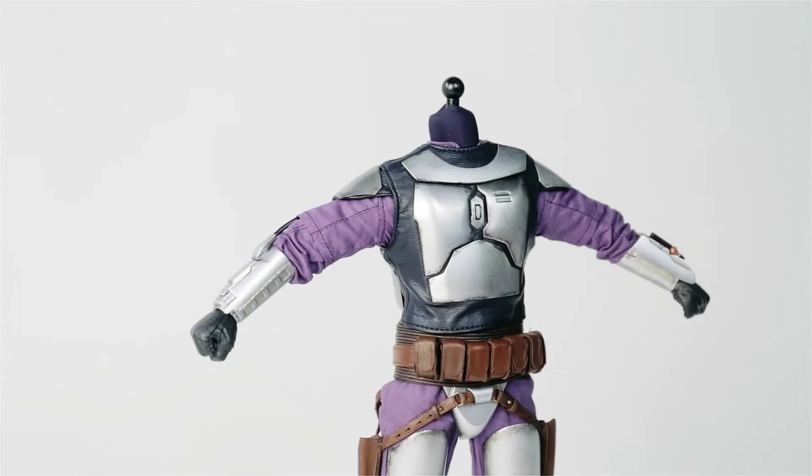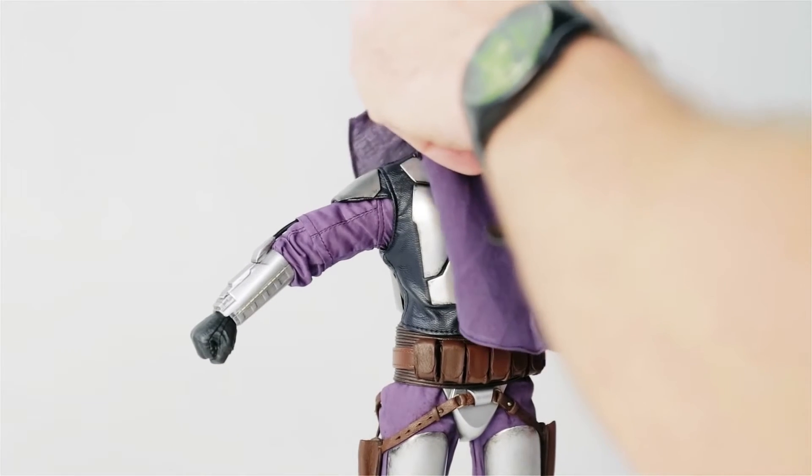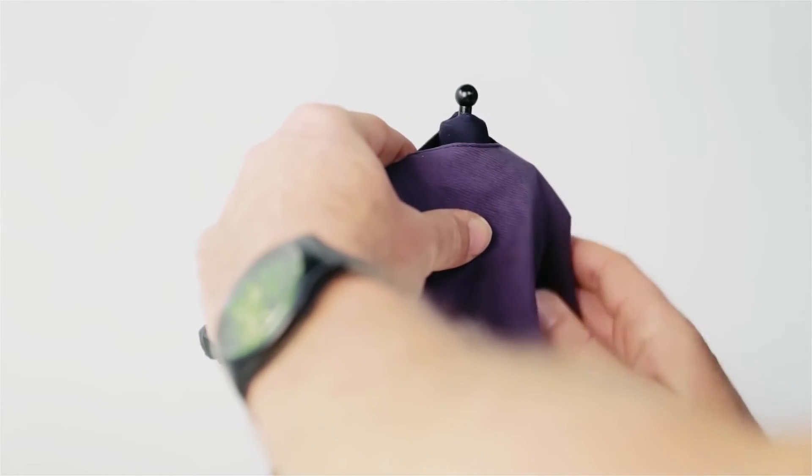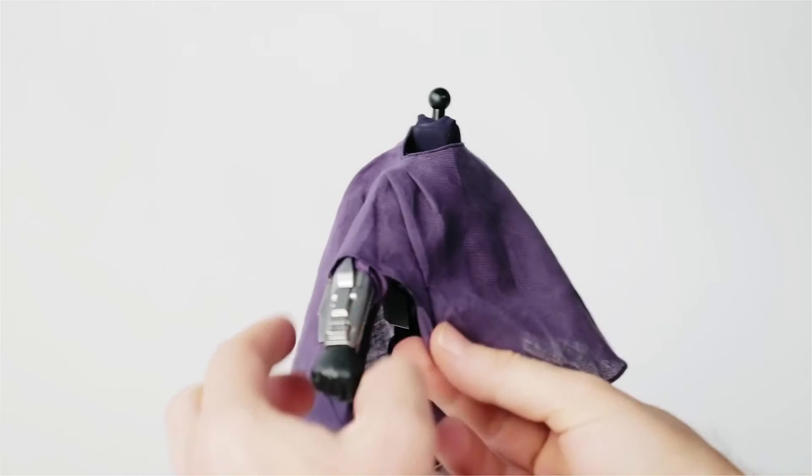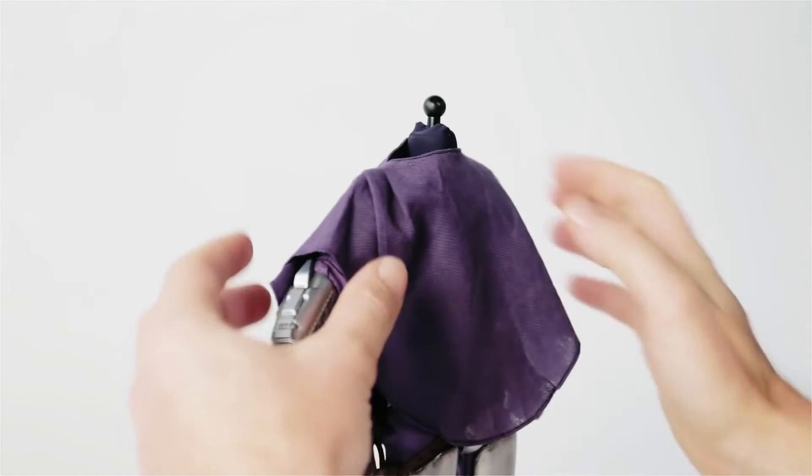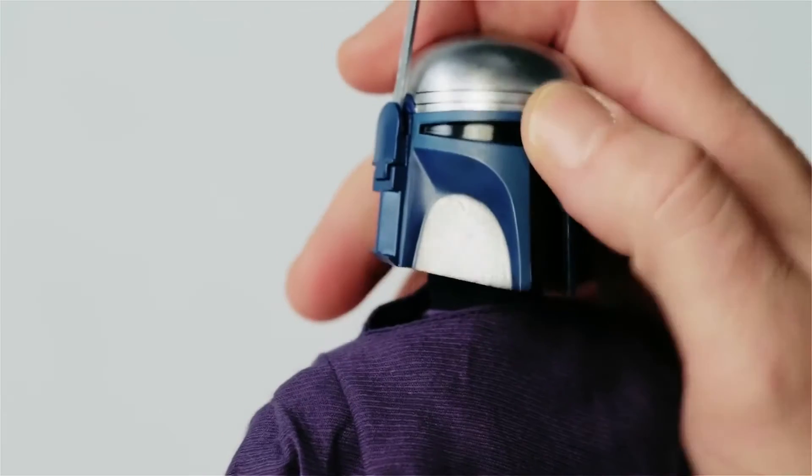Remove the helmet before placing the poncho on the figure. Feed the left arm through the hole in the poncho, ensuring that the pleated side is on Django's back and the smooth side is on his front. Once the poncho is draped on his body, secure the snap under his right arm and place the helmet back on the figure.